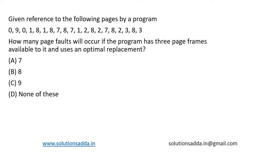This is a question from operating systems. Given reference to the following pages by a program: 0, 9, 0, 1, 8, 1, 8, 7, 8, 2, 3, 8, 3. How many page faults will occur if the program has three page frames available and uses optimal replacement? Optimal page replacement replaces those pages from memory which are least used in the future. We have three page frames available in memory.